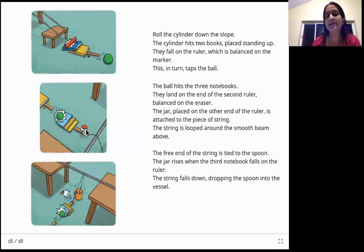So the notebooks will fall on the second ruler or scale. So on the other end of the scale is a plastic jar. Okay? So underneath the plastic jar, they've kept a string. And the string is looped on a smooth beam above. And at the other end of the string is the final teaspoon. That's tiny. Okay? And underneath it is a vessel for the teaspoon to drop. So when the notebooks fall on the scale, what happens? It's again another seesaw, right? When one falls down, the other has to go up.